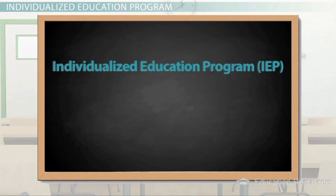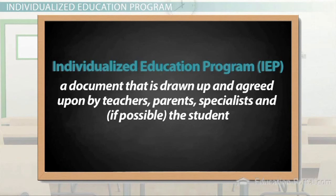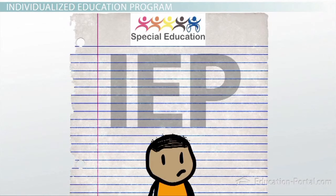An IEP is a document that is drawn up and agreed upon by teachers, parents, specialists, and, if possible, the student. The document describes the present achievement level of the student, then specifies goals for the school year, as well as any special support needed to achieve those goals.